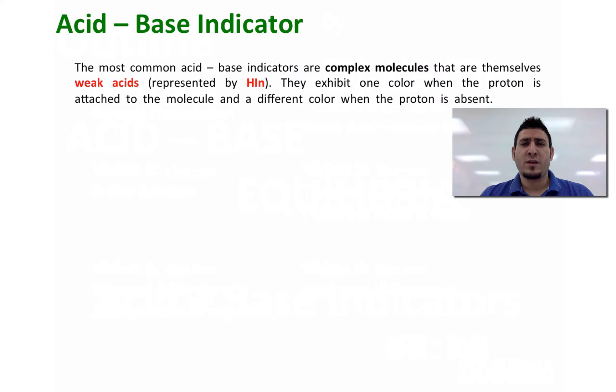So In⁻ will be the conjugate base of the HIn acid. They exhibit one color when the proton is attached to them and another color when the proton is separated.